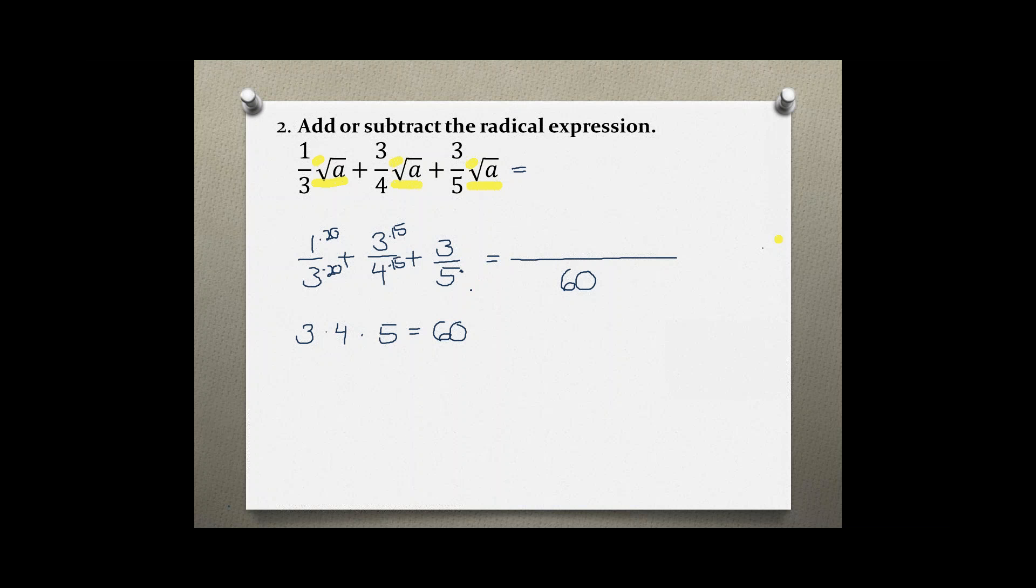And with 5, I would have to multiply 5 times 12 to get 60, and again I do that with numerator and denominator. So just rewriting my fractions right here: 1 times 20 is 20, then plus 3 times 15 which gives me 45, and then 3 times 12 which gives me 36.